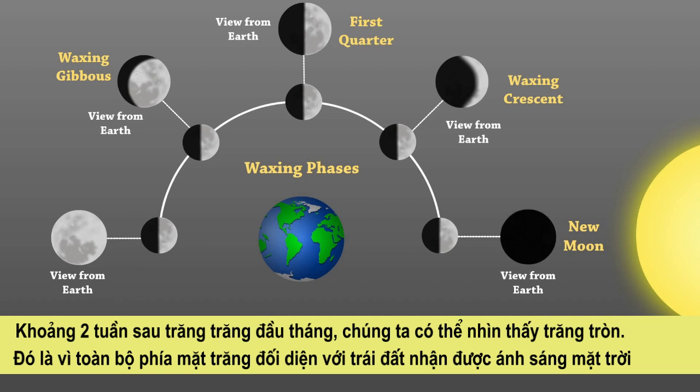About two weeks after the new moon, we can see the full moon. This is because the full side of the moon facing the earth gets sunlight.